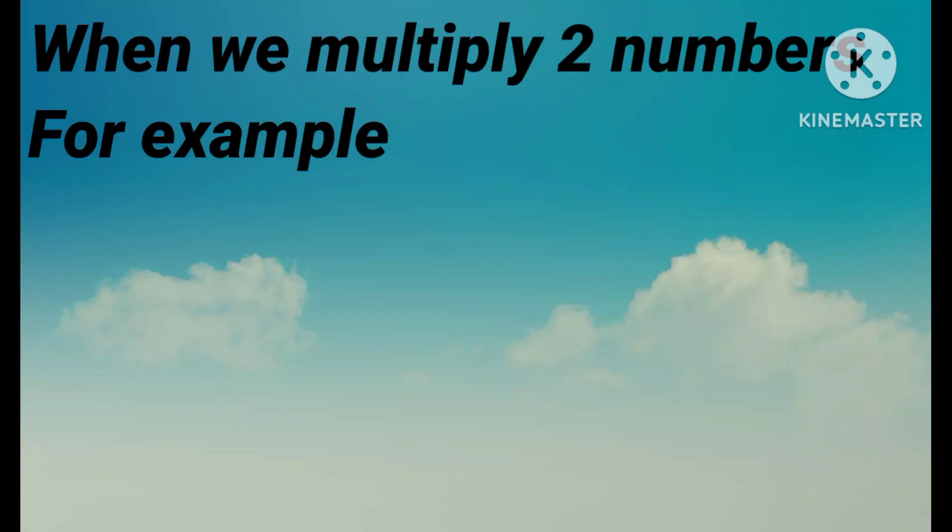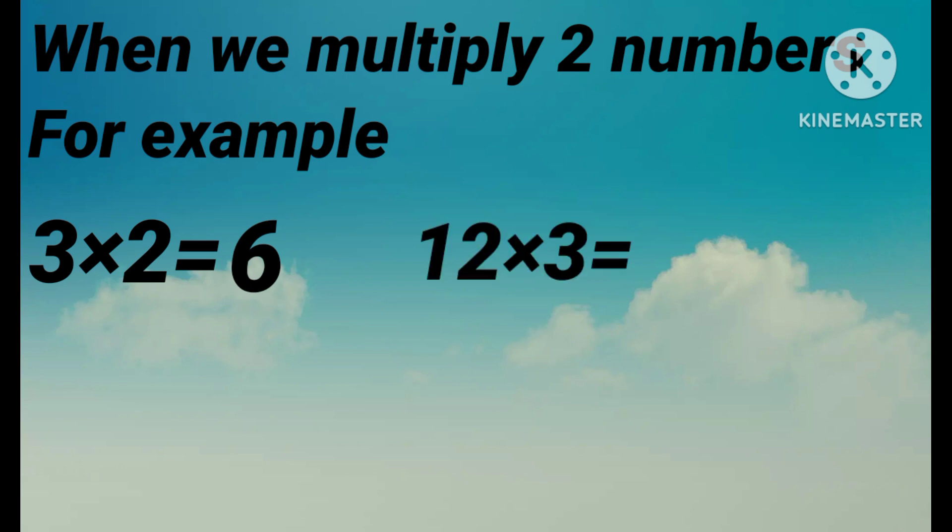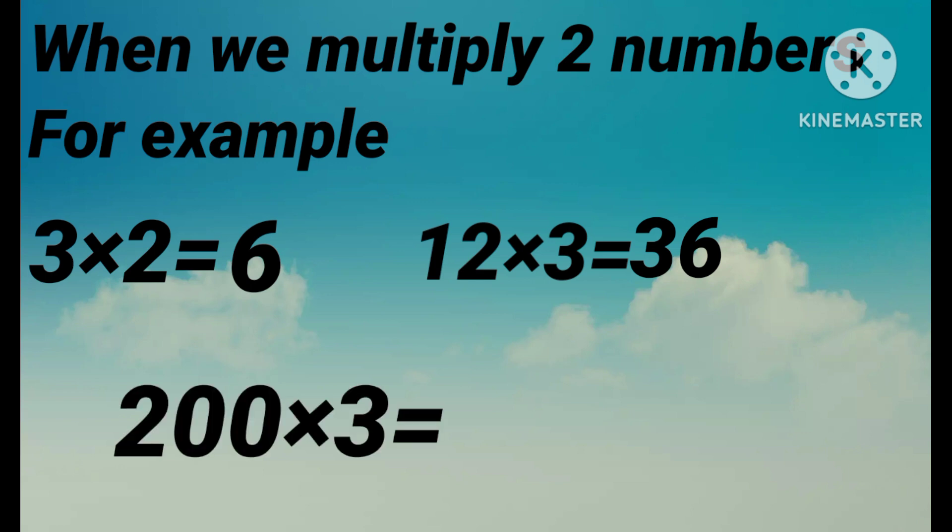Do you know what happens when we multiply two numbers? For example, 3 multiply by 2, the answer is 6. 12 multiply by 3, the answer is 36. 200 multiply by 3, the answer is 600.